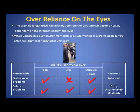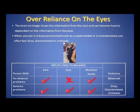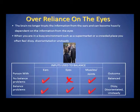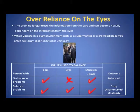The brain can stop trusting the ears and can become heavily dependent on the information from the eyes. You may have noticed that when you are in a busy environment such as a supermarket or a crowded place, you often feel dizzy, disorientated or unsteady. When a person without balance problems goes into a busy environment, the brain just uses information from the ears and muscles and joints to keep balanced, as it knows the information from the eyes is unreliable as the eyes are detecting lots of movement. When a person has a balance problem, they may have become heavily dependent on the information from the eyes.